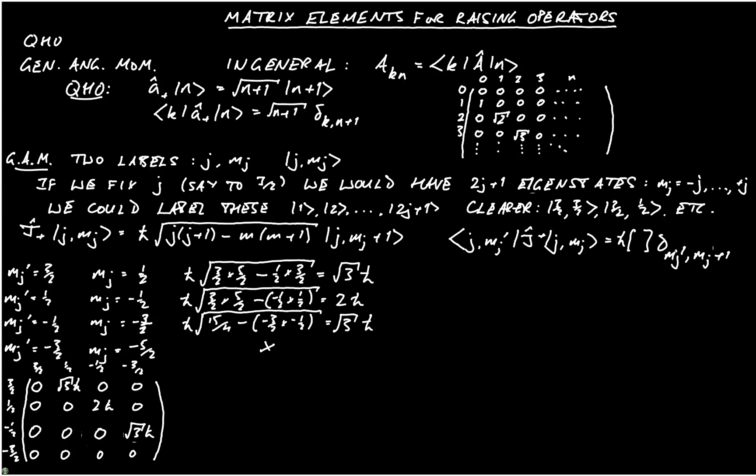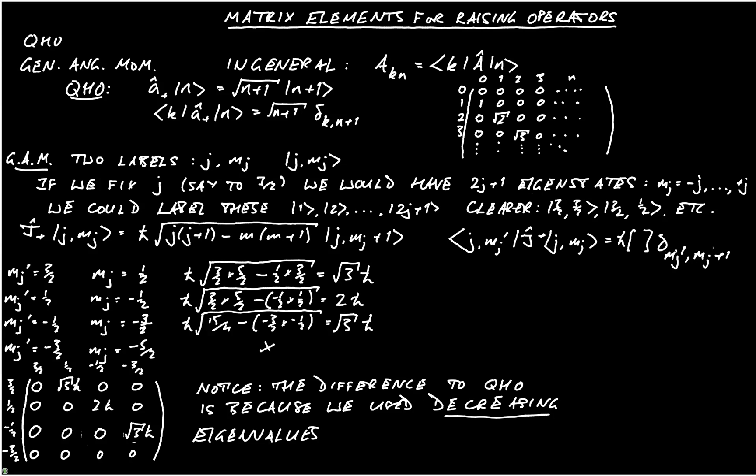Notice that this is different to the raising operator for the quantum harmonic oscillator. The difference to the quantum harmonic oscillator is because we're using decreasing eigenvalues for the generalized angular momentum. This is purely conventional. You could, of course, do it starting with mj prime is minus 3 over 2, and go down. And in that case, the matrix had exactly the same structure as for the quantum harmonic oscillator. It doesn't change the essential physics of the situation, but it does change the way that the matrix looks, and it's important to understand this.